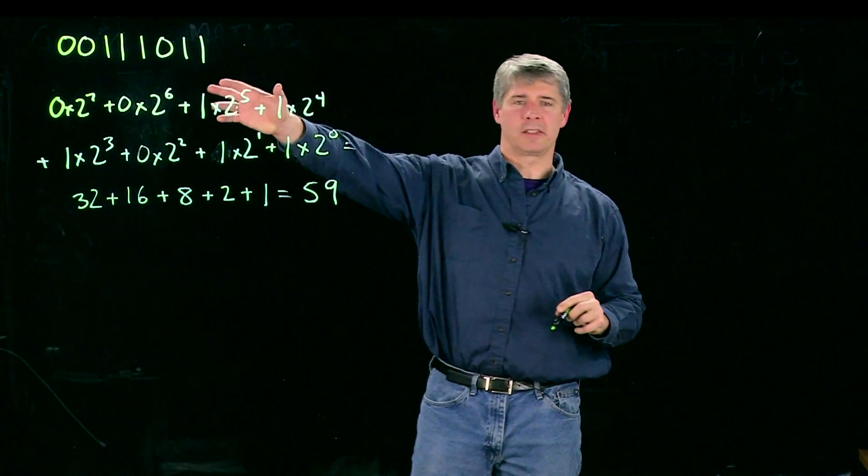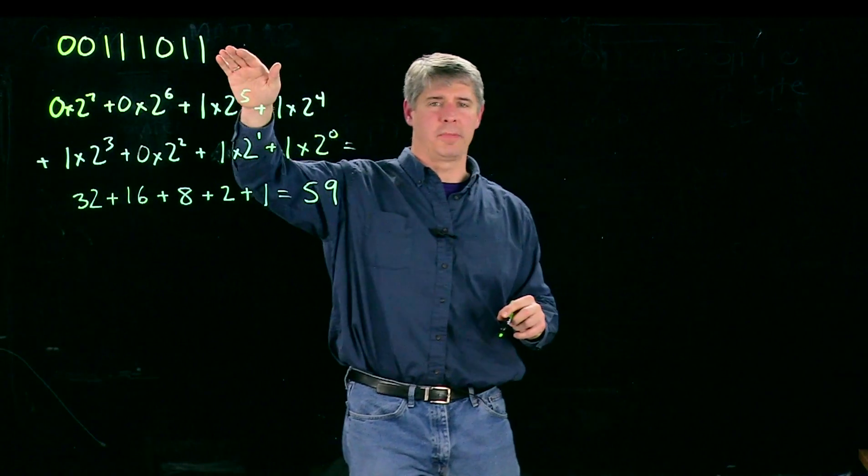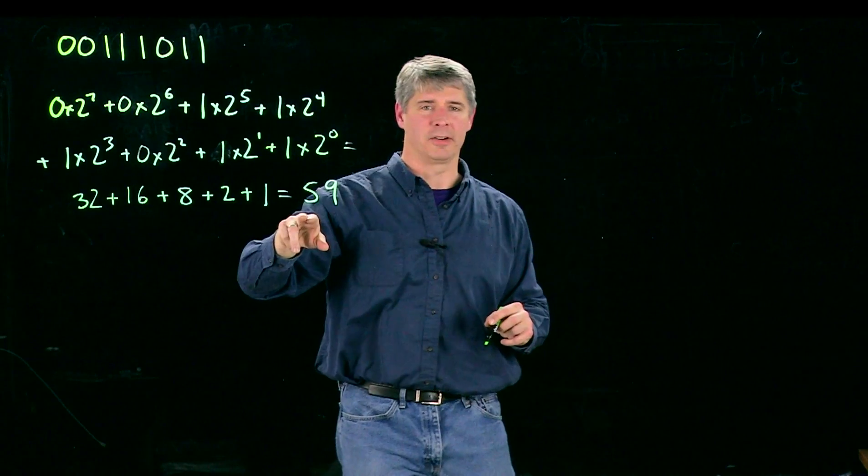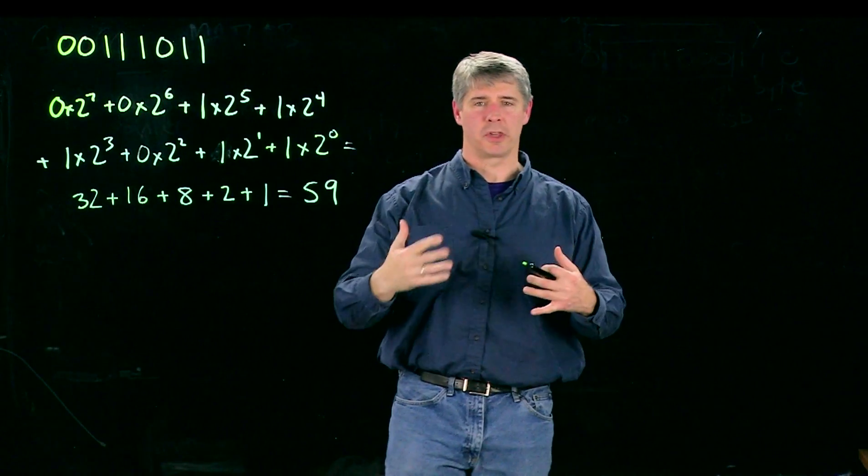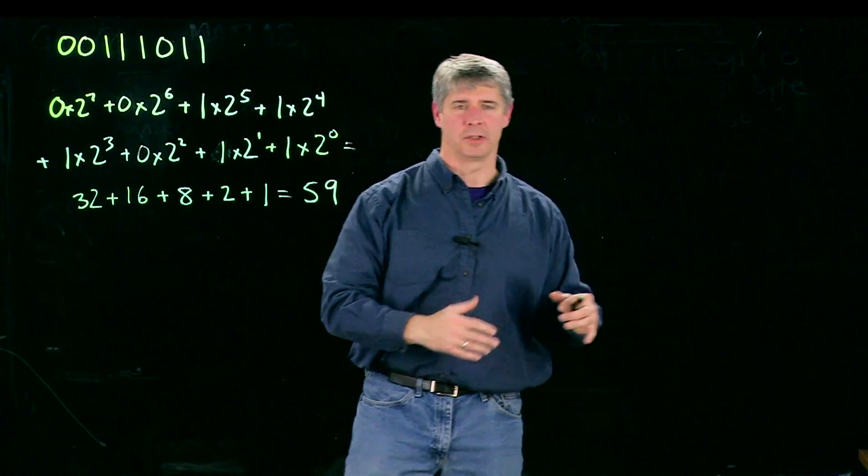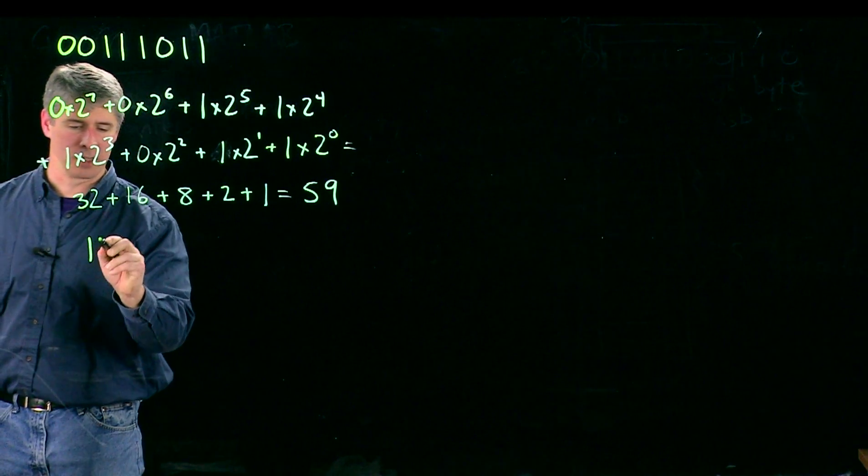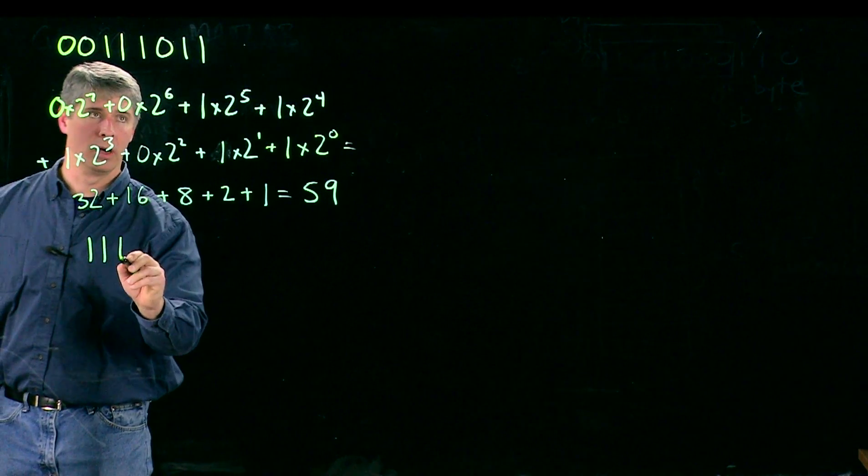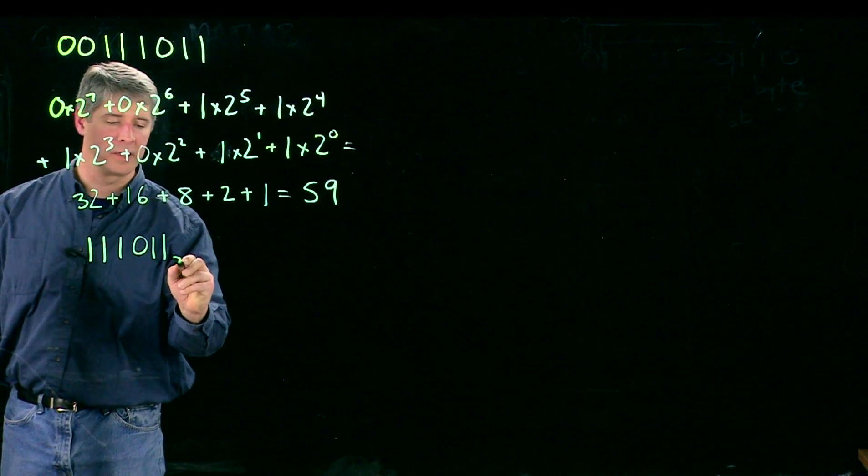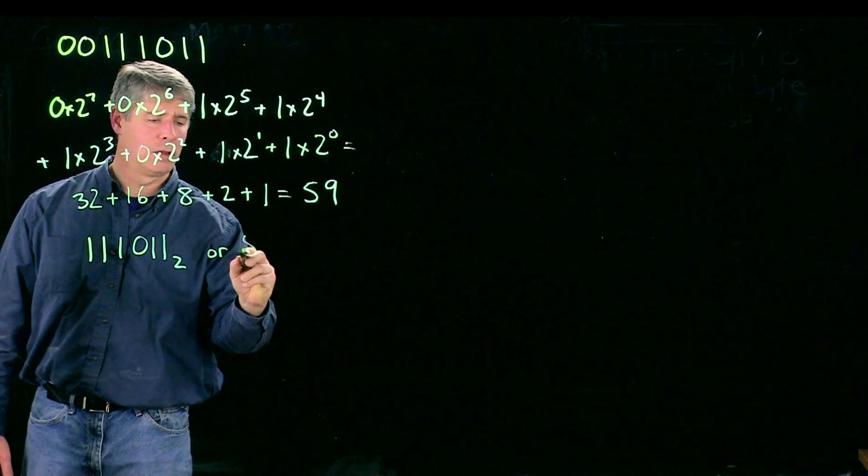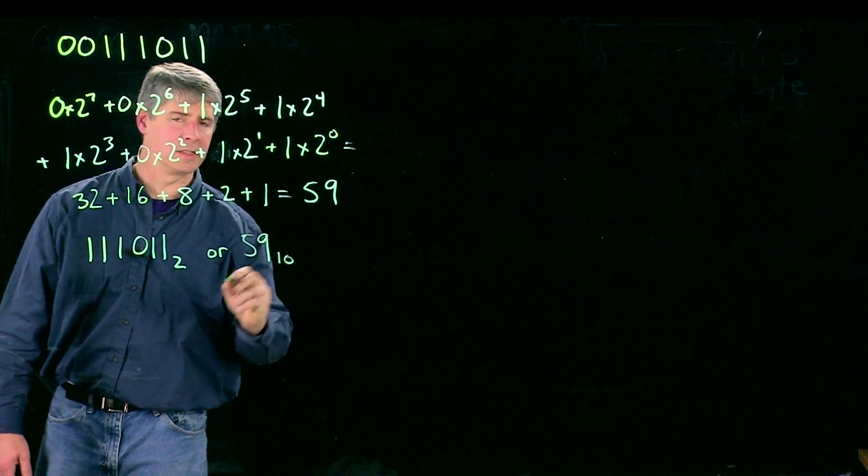So we can write the same number either in base 2 or binary, or base 10 or decimal. And to distinguish whether you're writing in binary or decimal, you can write the base as a subscript. So I'm going to drop out these leading zeros. We can write this as 111011 base 2, or 59 in base 10.